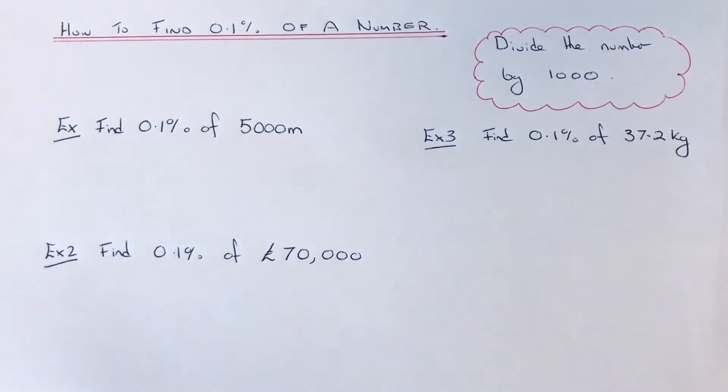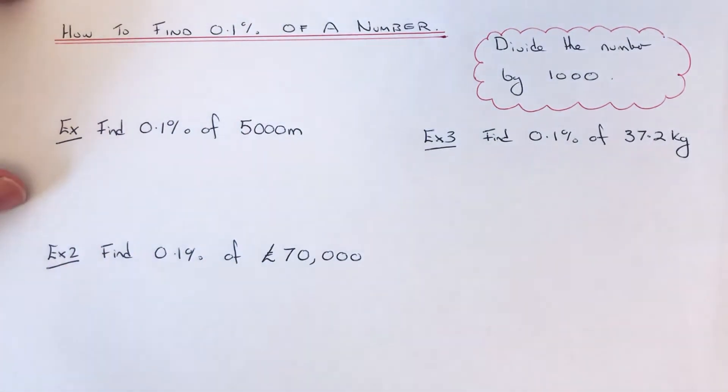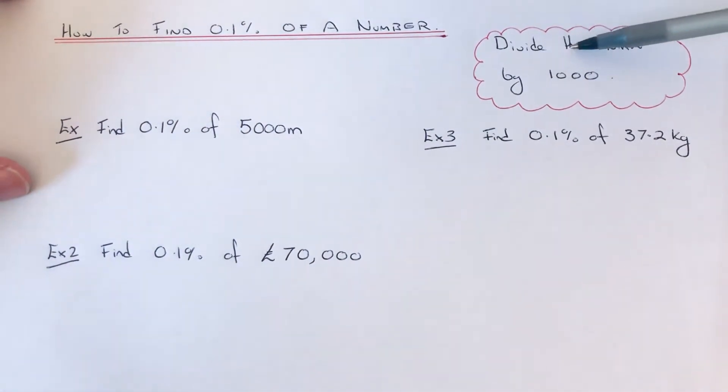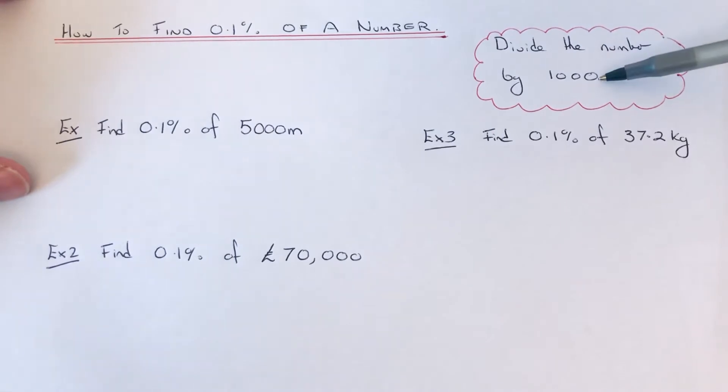Hi guys, welcome back. Today I'm going to show you how to work out 0.1% of any number. You can do this by dividing the number by 1,000.